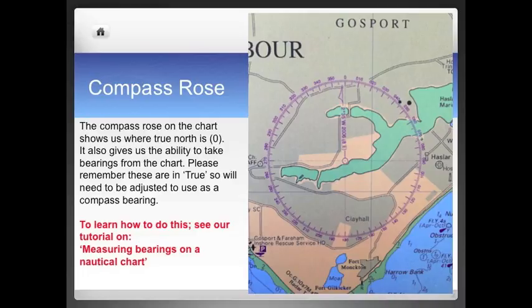The compass rose shown on the charts shows us where true north is, which is the zero. It also gives us the ability to take bearings off the charts. Please remember that the information taken off here is in true, not in magnetic, so these will need to be adjusted to use on a compass. To learn how to do this accurately, please watch our video tutorial on measuring bearings on a nautical chart on our YouTube channel.